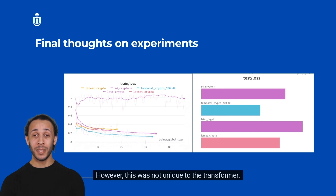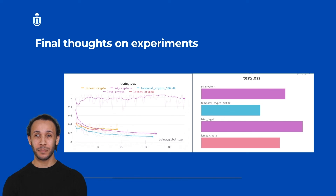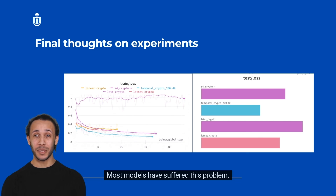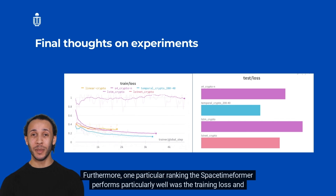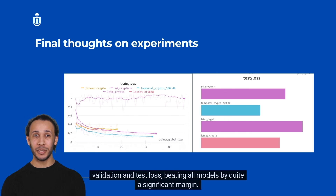Comparing results across five different models, the Spacetime Former predictions tend to follow the ground truth more often than the other models. However, good predictions were typically limited to cryptocurrencies with large market caps such as BTC and ETH. Minor currencies had their trading trend commonly identified, but the scale was way off — though this was not unique to the transformer, as most models suffered the same problem. One area where the Spacetime Former performed particularly well was training, validation, and test loss, beating all other models by a significant margin.